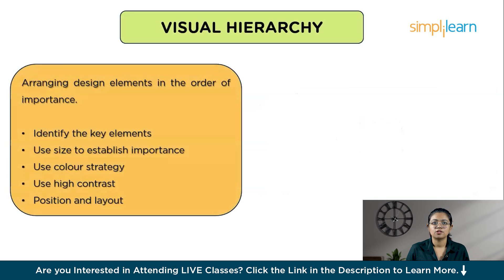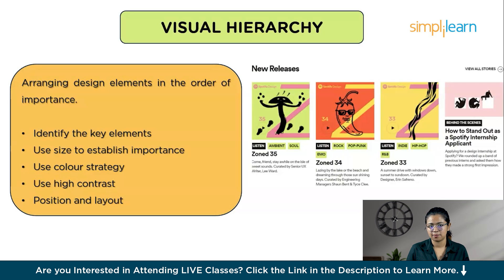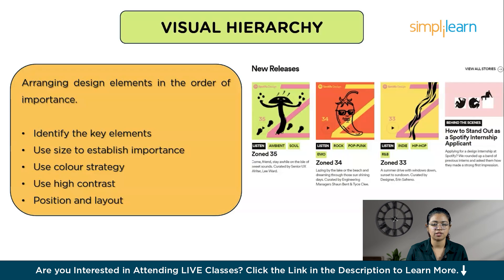Visual hierarchy is a way of arranging design elements so that they appear in order of importance. It helps guide users' eyes to what they should notice first, second, and so on. To achieve visual hierarchy: prioritize the most important elements, use size to establish importance since larger elements draw more attention than smaller ones, and maintain text sizes according to priority. Use color strategy — bold and bright colors for elements to stand out, such as bright catchy colors for call-to-action elements. Use high contrast for important elements, and select appropriate typography while considering position and layout.